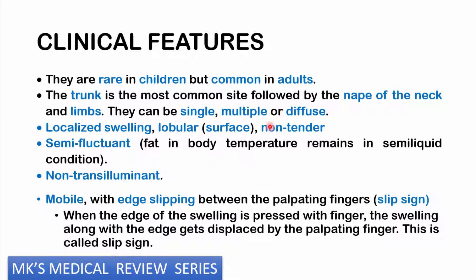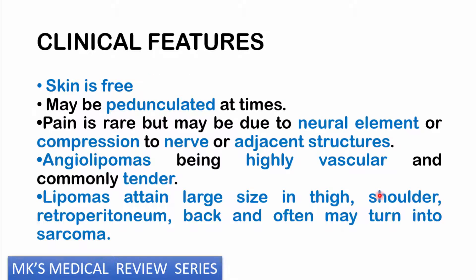It's semi-fluctuant. The reason why it's semi-fluctuant is because this is a tumor of fat, and fat at body temperature remains in a semi-liquid condition. So if you apply some pressure — placing your middle finger and thumb on the lateral sides and applying pressure 90 degrees on top of the swelling — you may feel the bulging on the sides. It's non-transilluminant, meaning if you place a torch there it doesn't illuminate. Most of the times it is mobile, and the edge is going to be slipping away if you palpate with your fingers. You refer to this as the slip sign: when the edges of this swelling are pressed with your fingers, the swelling is actually going to be displaced by your palpating finger. The skin may sometimes be free.